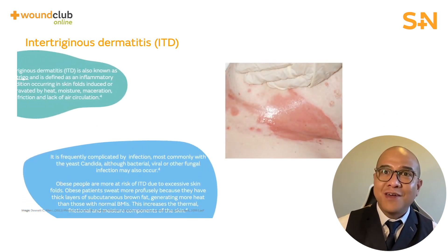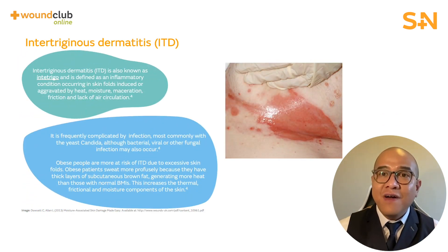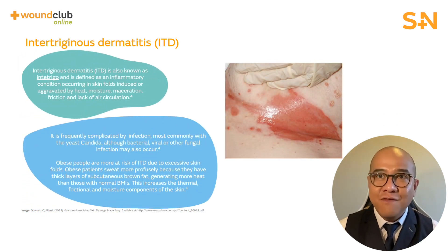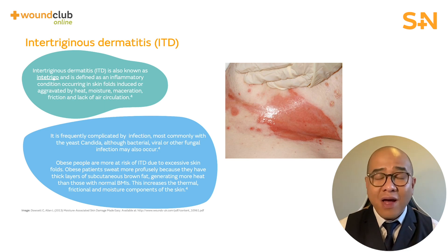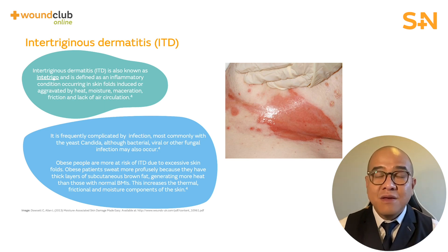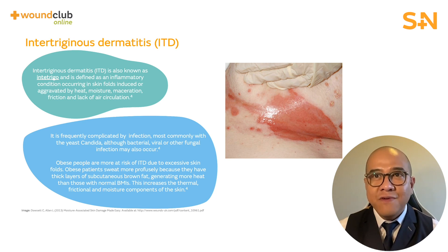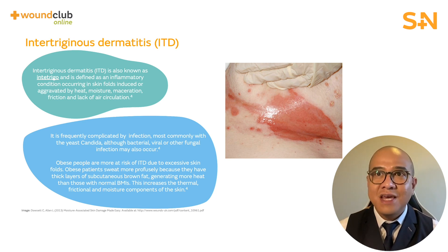Intertrigo is defined as an inflammatory condition occurring in skin folds, induced or aggravated by heat, moisture, maceration, friction, and lack of air circulation.